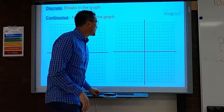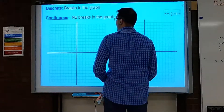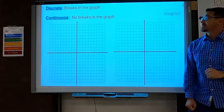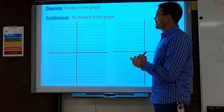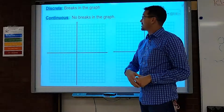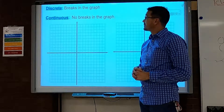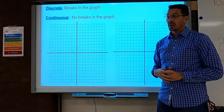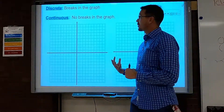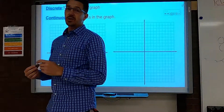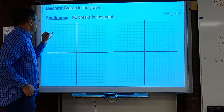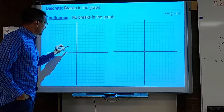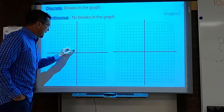Alright everybody, let's continue on with discussing functions. But first we're going to learn some vocabulary words — the word 'discrete.' When we're talking about graphs, a discrete graph is a graph where you have individual points.